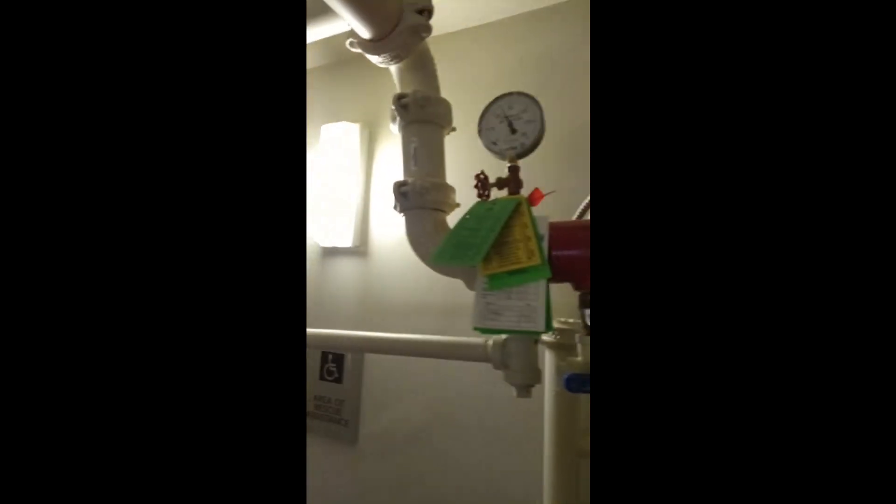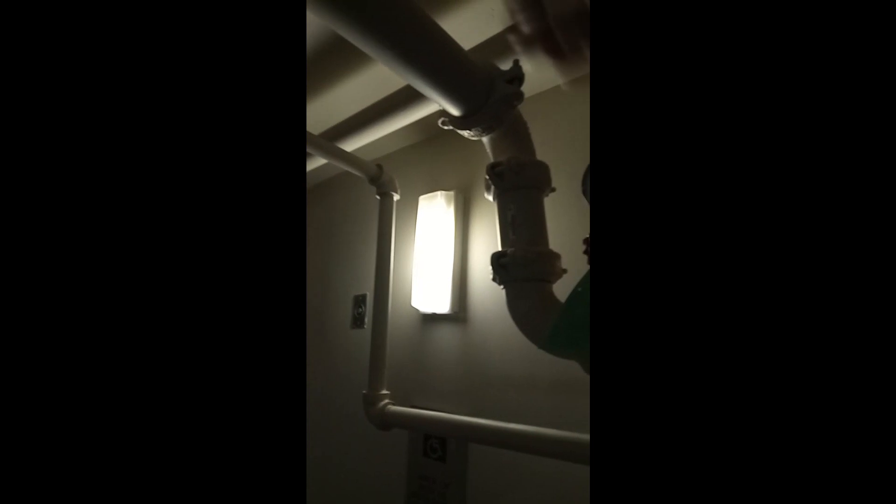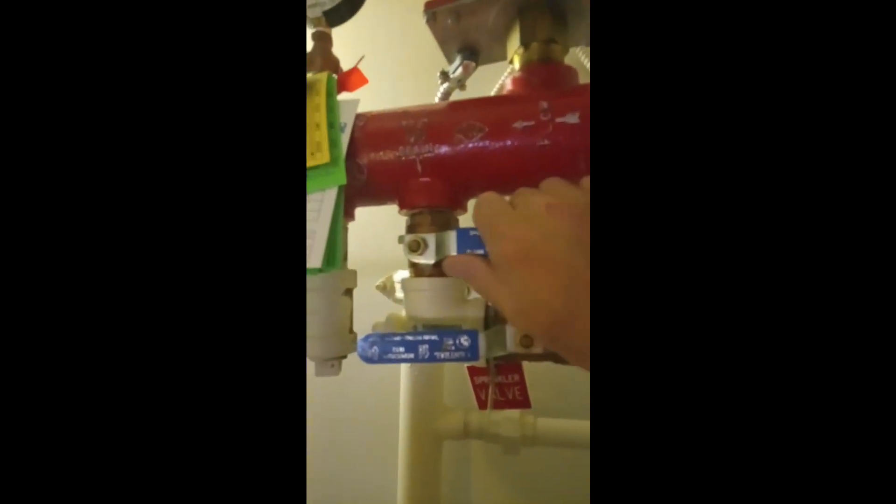At this point you should have all of the shutoff valves closed for your location. There is still going to be a lot of pressure in the water lines even though you have a broken sprinkler head. Therefore, we need to open the drain ball valve. This will allow the water to exit the lines and travel outside of the building. As you turn the ball valve, you will notice the pressure gauge drop all the way down to zero. You can verify that all of the water has drained by looking at the sight glass.